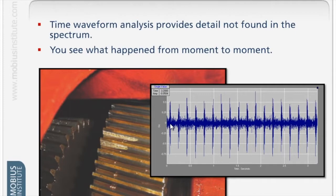The spectrum takes a long record of all that and tries to summarize it into a spectrum. Sometimes that summarization process actually loses information. The time waveform tells us exactly what happened.